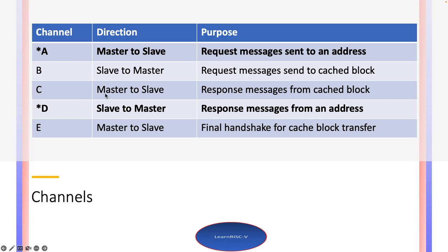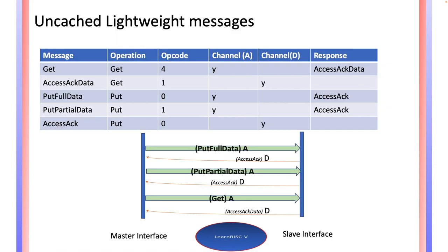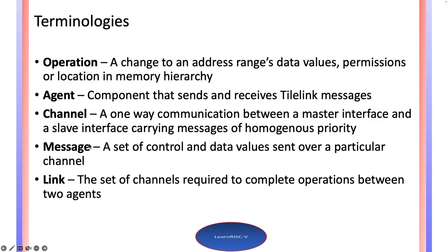Channels B, C, and E are all for cached blocks, which I won't be discussing in this first part. Channel D is directed from the slave interface to the master interface, and that's the channel that carries the response messages from the address.